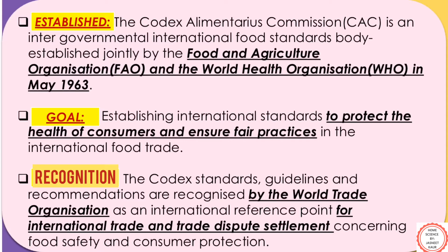Talking about the establishment of Codex Alimentarius Commission, it is an intergovernmental international food standards body, which was established jointly by the Food and Agriculture Organization, FAO, and the World Health Organization, WHO, in May 1963. The goal of establishing this international standard was to protect the health of consumers and ensure fair practices in the international food trade.